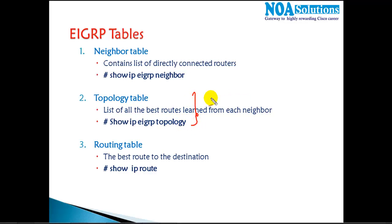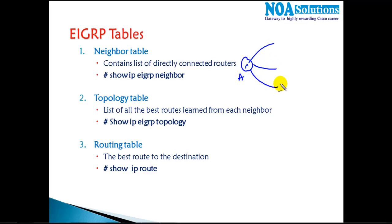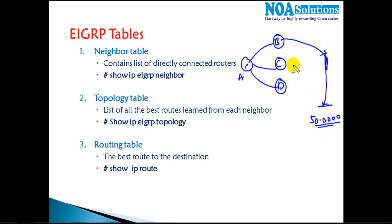The topology table contains a list of all the best routes learned from each neighbor. For example, Router A is connected to Router B, C, and D, and there is some network — say a 50.x.x.x network — reachable via B, C, or D. Router A has no direct route to that network, so it learns about it from B, C, and D. Each of those three routers will provide route information to Router A.